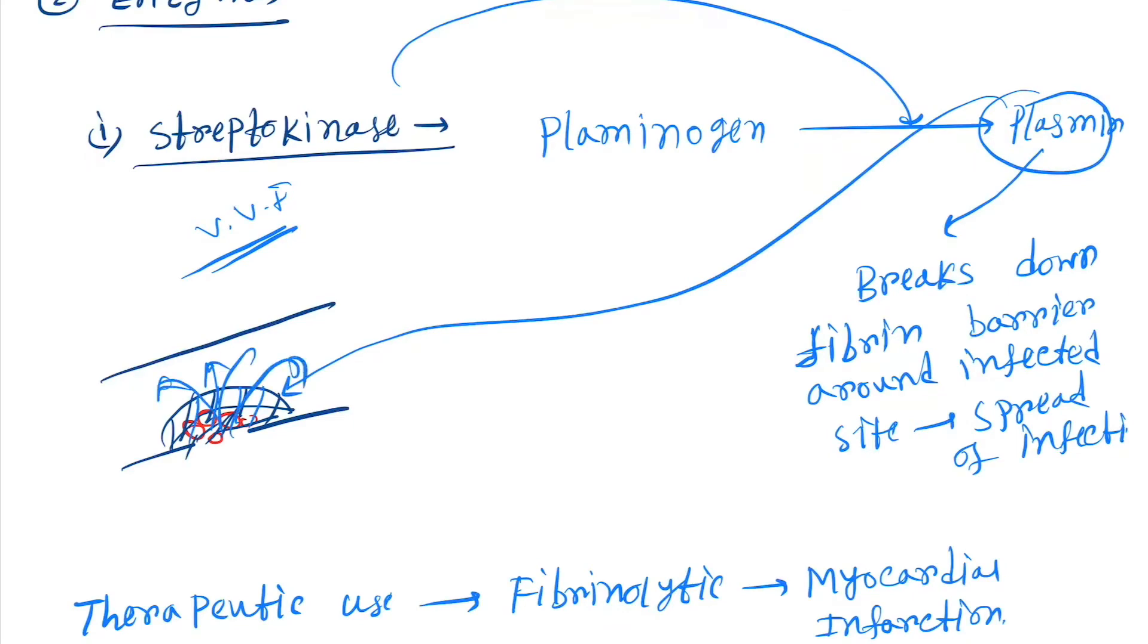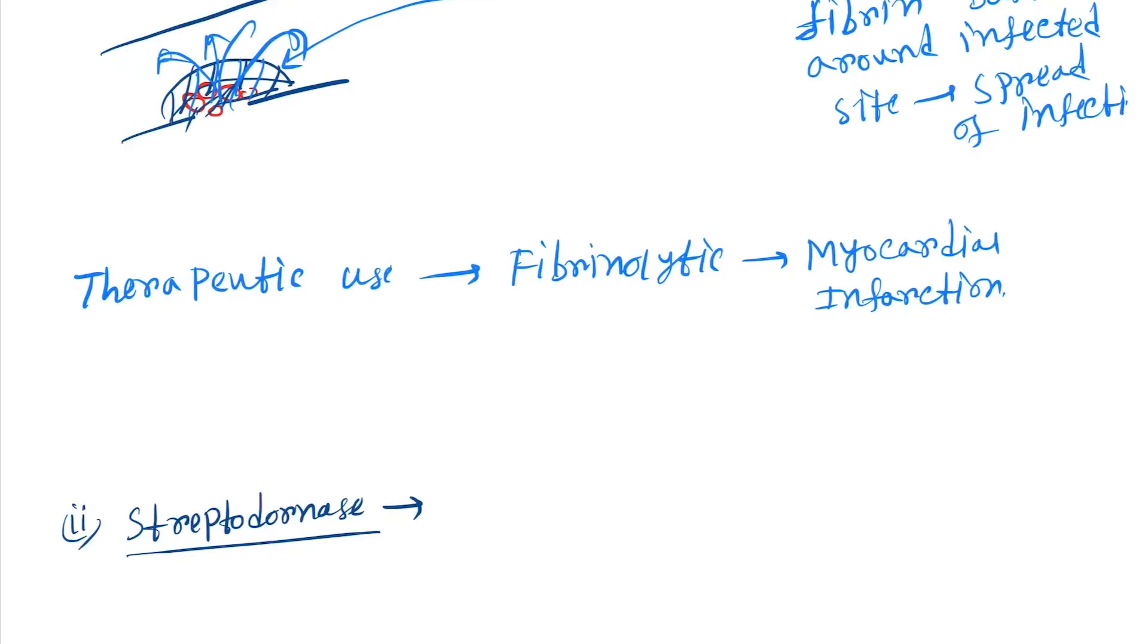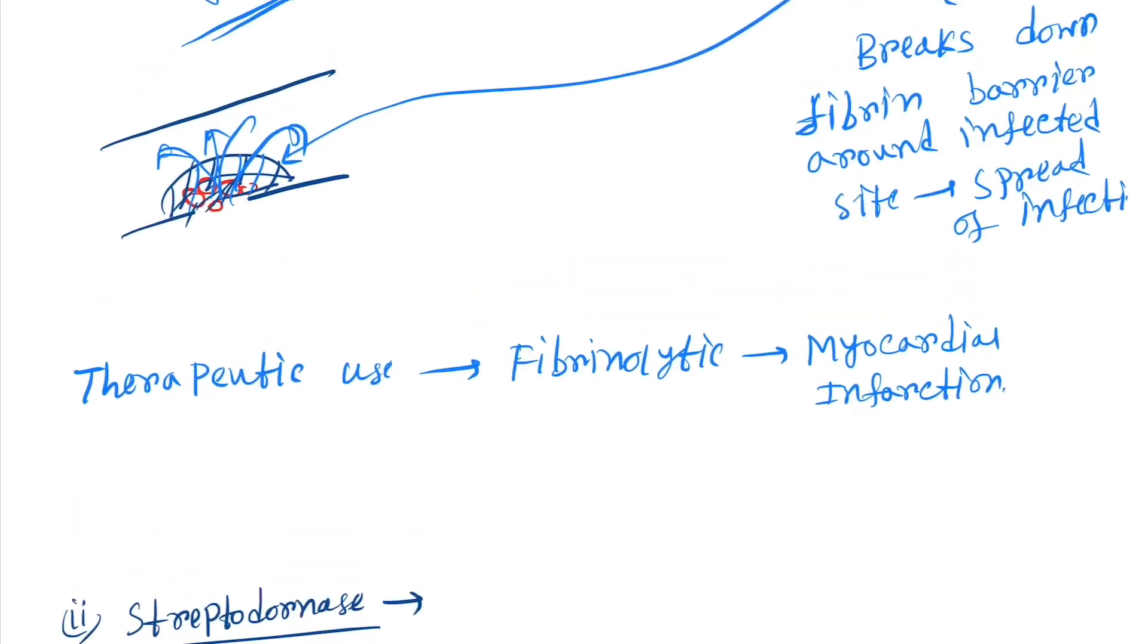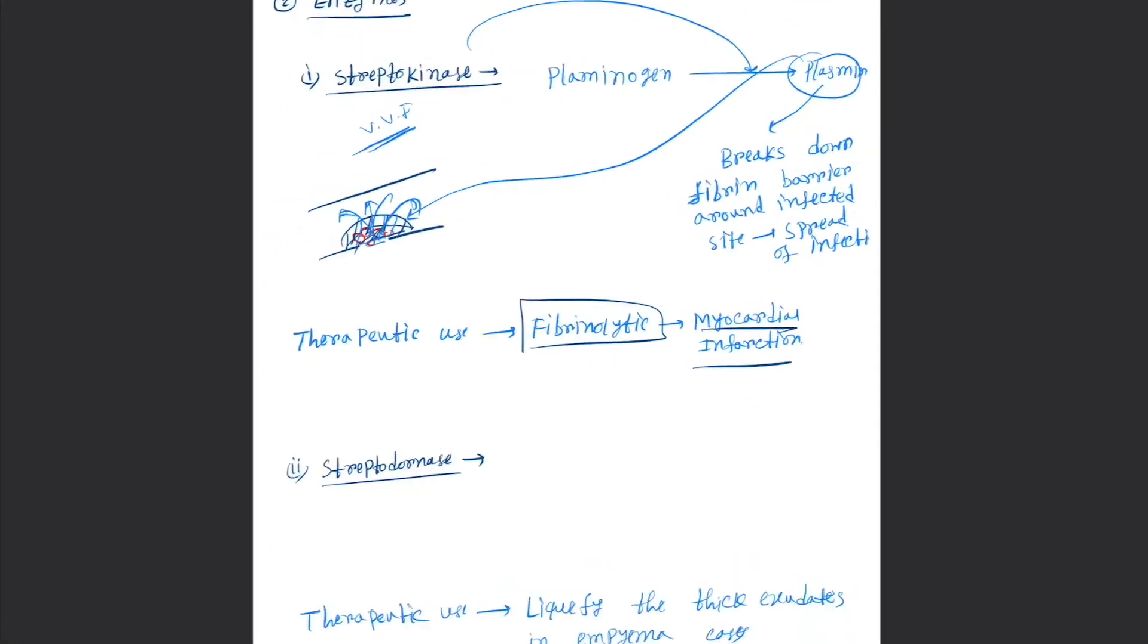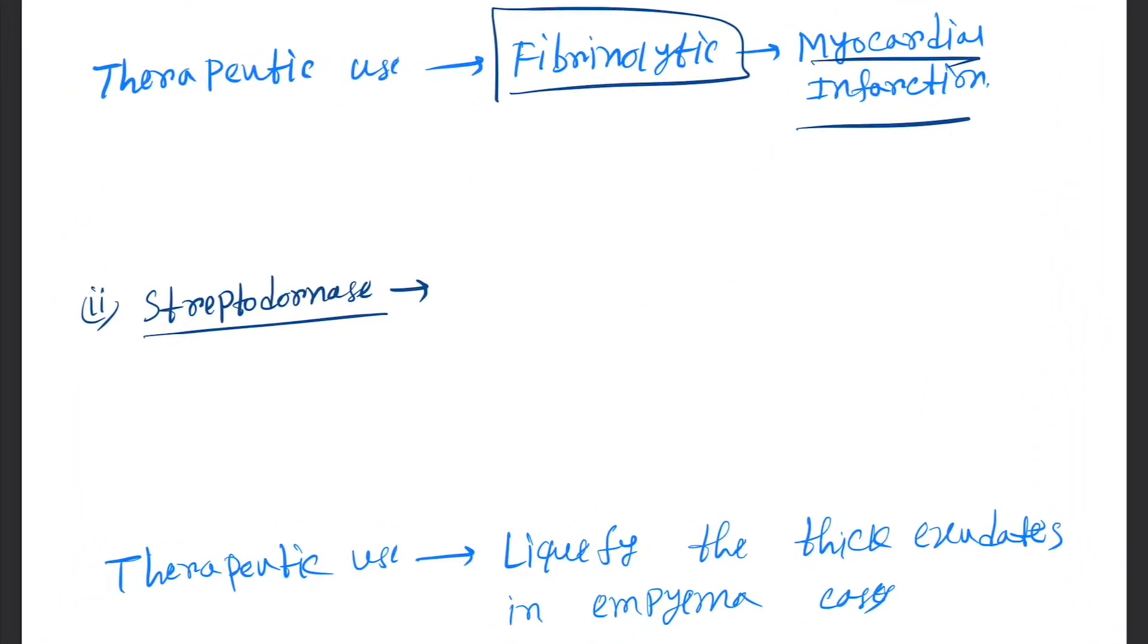Therapeutic use: if not any infection is there, then it is beneficial sometime. We will use fibrinolytic agent in myocardial infarction. Next is streptodornase, so they break down the DNA. Therapeutic uses: liquefy the thick exudates in empyema cases.